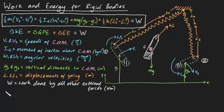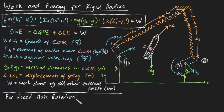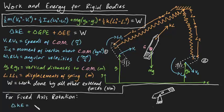This formula will always work, but for fixed axis rotation where the pen might be pinned at a point O, the whole change in kinetic energy term can also be evaluated by delta KE is equal to a half Io omega 2 squared minus omega 1 squared, where Io is the moment of inertia of the pen about the pin.